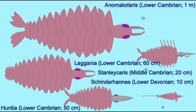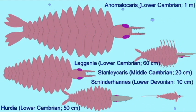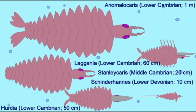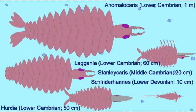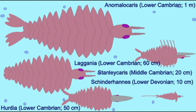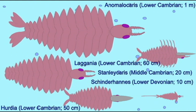During the early Cambrian, there appeared an interesting group of arthropod relatives known as the anomalocaridids. They are best known for Anomalocaris, known from the lower Cambrian, one meter long,